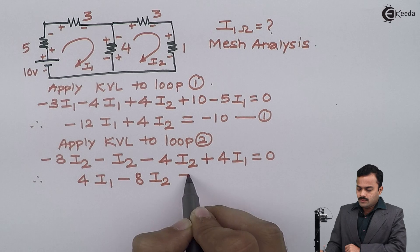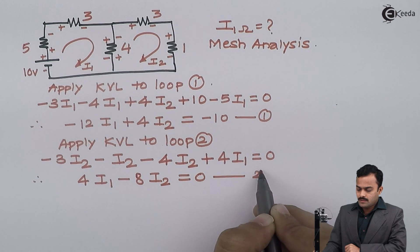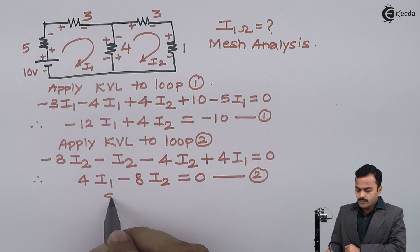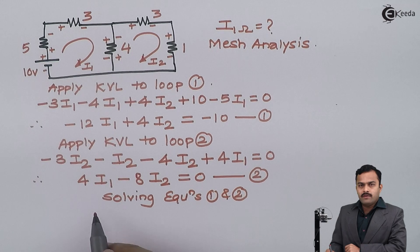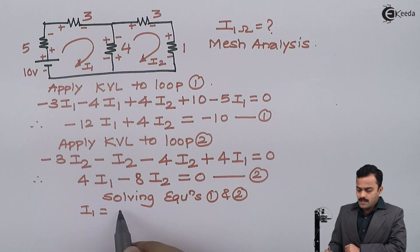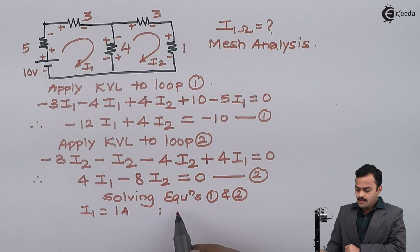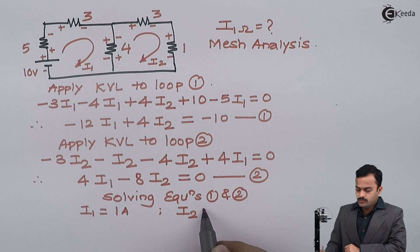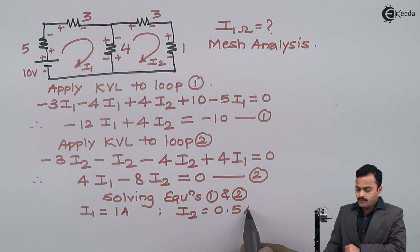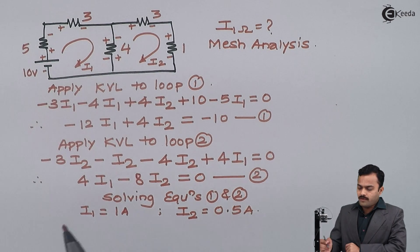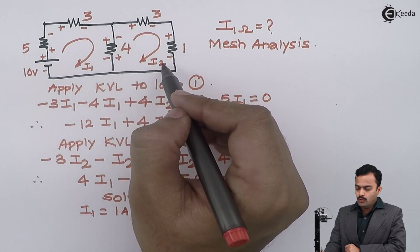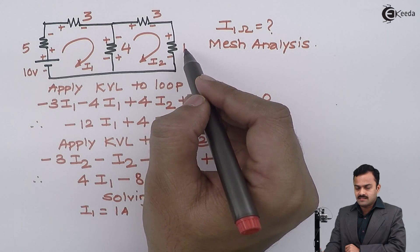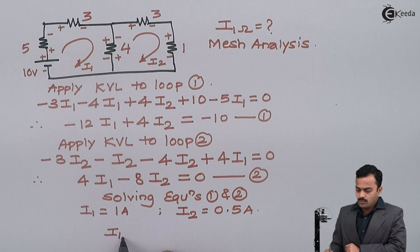After solving these two equations I will get answer I1 as 1 ampere and I2 as 0.5 ampere. The objective is to find out current flowing through the 1 ohm. If I see the circuit I'll come to know I2 is the current which is flowing through 1 ohm resistance, so current flowing through 1 ohm resistance will be same as I2 equal to 0.5 ampere.